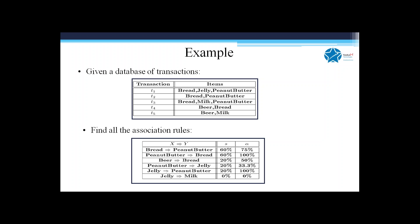This is very simple and intuitive: support is the percentage of all transactions containing all the variables you're concerned with, and confidence is — within the left-hand side transactions — what percentage also have the right-hand side. This is a naive way of discovering patterns, but it's very powerful and relevant across many fields, including crime detection and healthcare diagnostics.